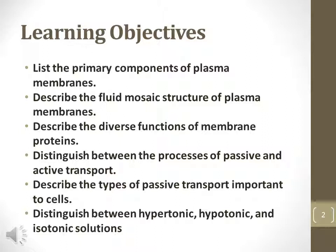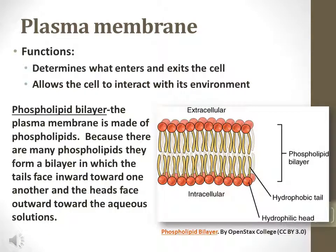Physical properties that affect cells are also discussed, including solution concentration. The plasma membrane was introduced as the division between the extracellular and intracellular space. The plasma membrane is important to regulate what enters and exits the cell, and it is the part of a cell that interacts with its surroundings. Plasma membranes are highly comprised of the organic macromolecule phospholipid, which forms two layers with the hydrophobic fatty acid tails oriented towards each other. The hydrophilic heads are situated on the outside.